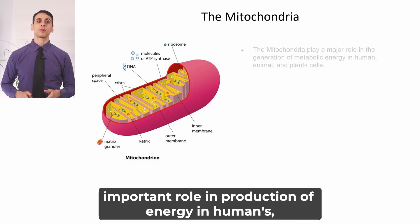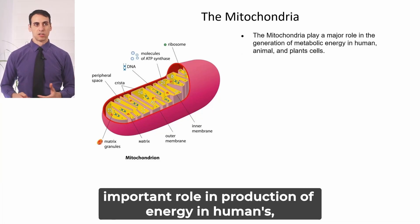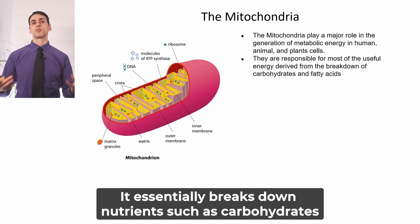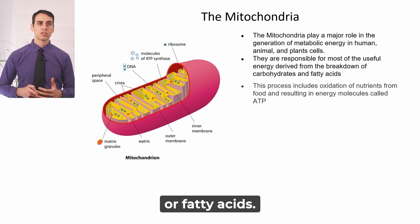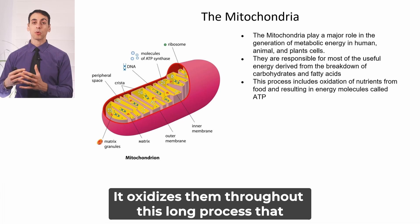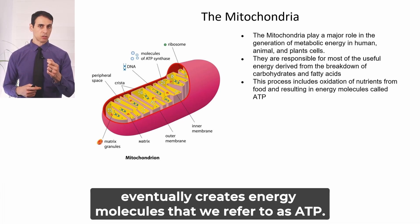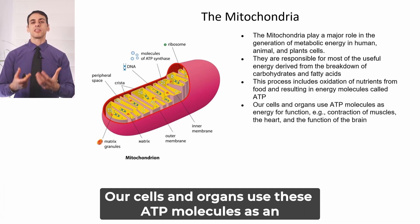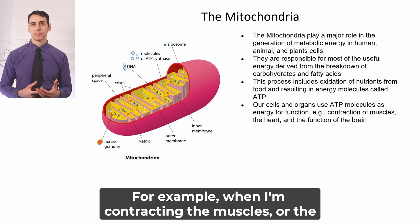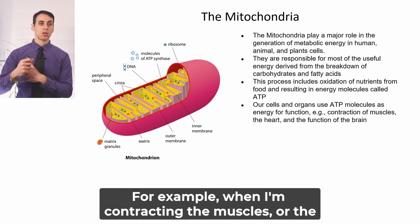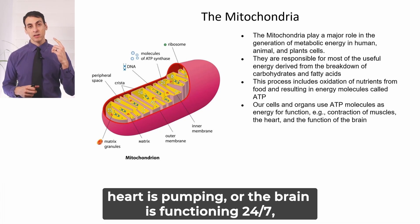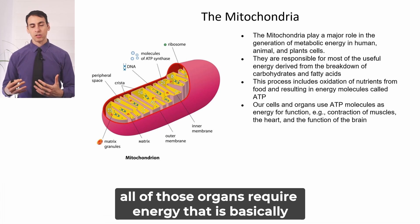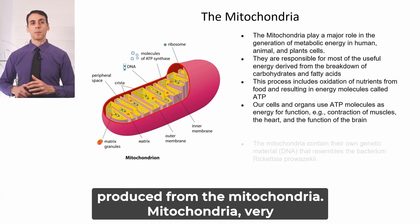The mitochondria has an important role in production of energy in humans, animals, and plant cells. It essentially breaks down nutrients such as carbohydrates or fatty acids, oxidizing them through a long process that eventually creates energy molecules we refer to as ATP. Our cells and organs use these ATP molecules as energy for function — for example, when contracting muscles, when the heart is pumping, or when the brain is functioning 24-7. All of those organs require energy that is produced from the mitochondria.